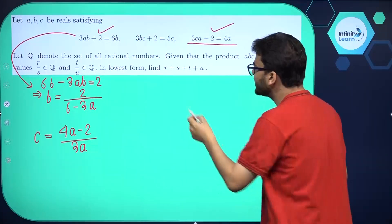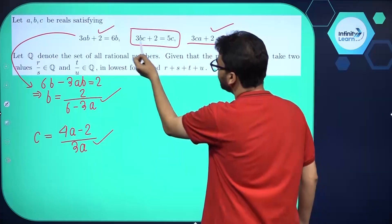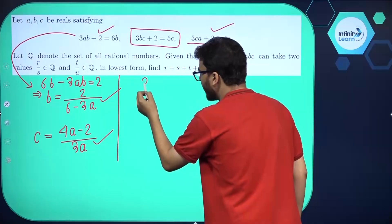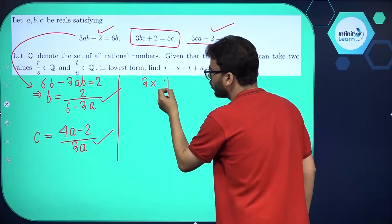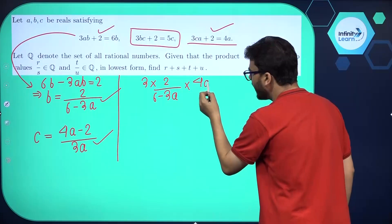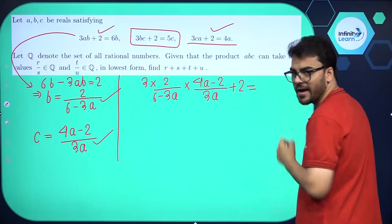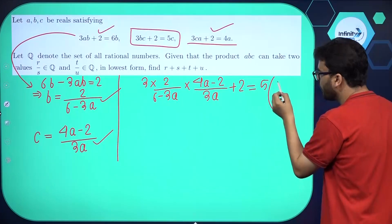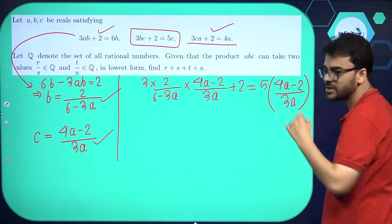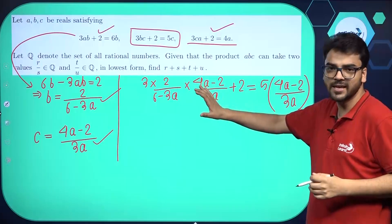Now we have B in terms of A and C in terms of A. Can I substitute B and C into the second equation? We get 3 times B, which is 2 divided by (6 minus 3A), plus C which is (4A minus 2) divided by 3A, plus 2, equal to 5C, which is 5 times (4A minus 2) divided by 3A. This is now an equation in one variable, A, and we need to solve it.